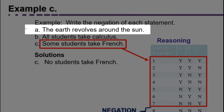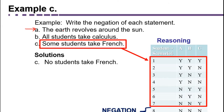Statement A was easier than B and C because there were only two possible outcomes — the earth does revolve around the sun, or it doesn't. What made B and C harder is that they contained words called quantifiers, which indicate a certain quantity. When you negate a statement with a quantifier, you have to take those quantifiers into consideration.